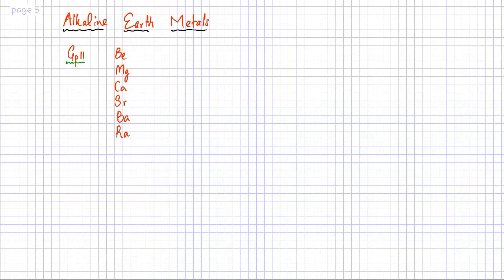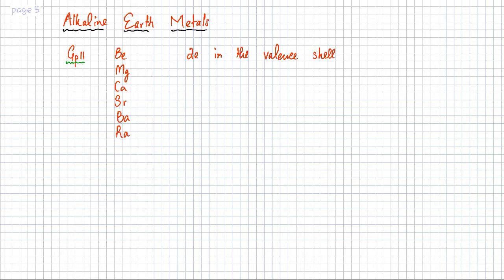In this section we discuss the alkaline earth metals. These are metals located in group 2, and they include beryllium, magnesium, calcium, strontium, barium, and radium. All these metals have two electrons in the valence shell. Since they are metals they lose electrons when they react, so they always have a charge of +2 — they lose two electrons and their oxidation state is +2.